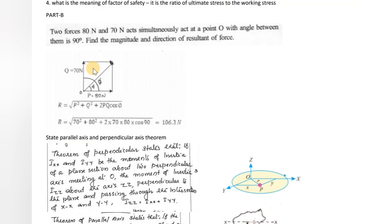The Part B problem: Two forces of 80 N and 70 N act simultaneously at a point with an angle of 90 degrees between them. Find the magnitude and direction of the resultant force.